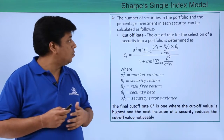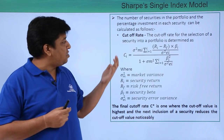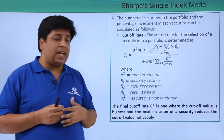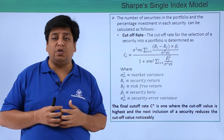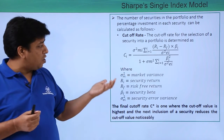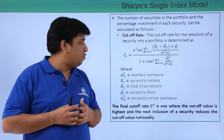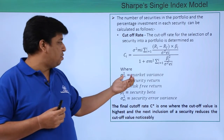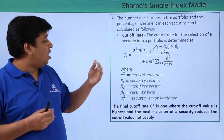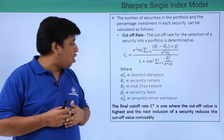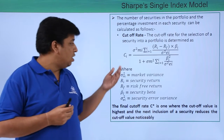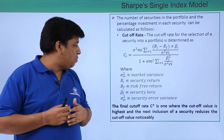The number of securities in the portfolio and the percentage investment in each security can be determined using the cutoff rate method. The cutoff rate for selection of a security into a portfolio is determined by the formula: cutoff rate equals market variance multiplied by the summation of (RI minus RF) times beta, divided by security error variance — all divided by one plus market variance times the summation of beta squared divided by security error variance.